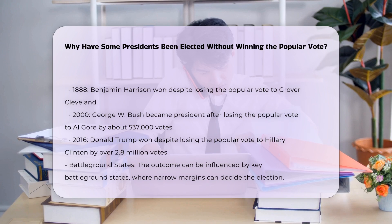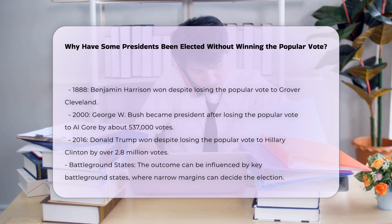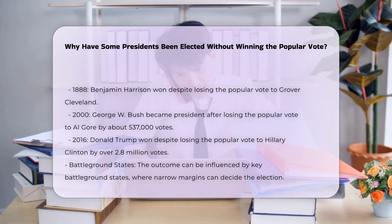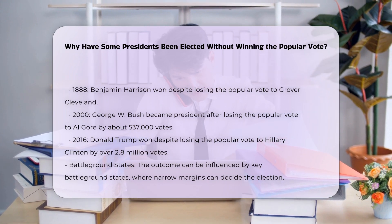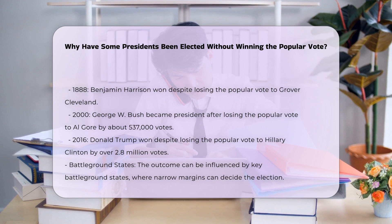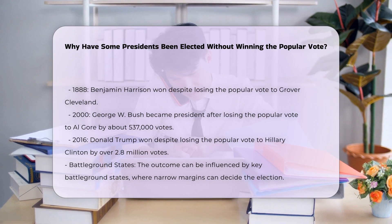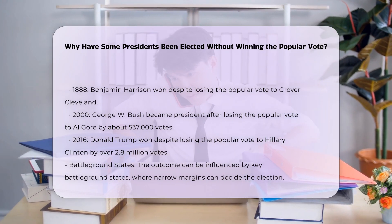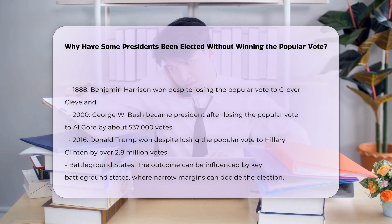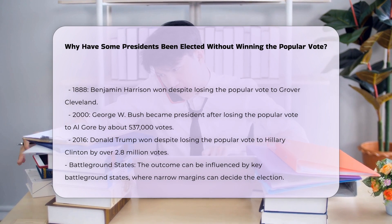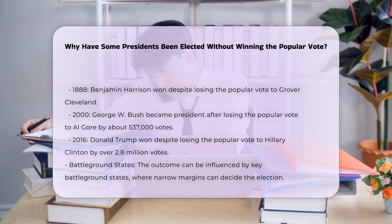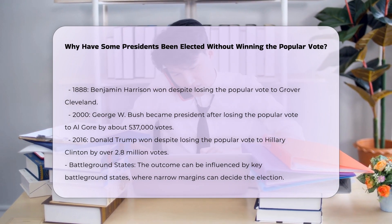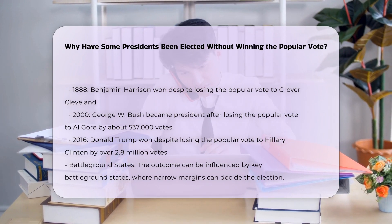In 1876, Rutherford B. Hayes became president even though he lost the popular vote to Samuel J. Tilden by nearly 250,000 votes. In 1888, Benjamin Harrison won the presidency despite losing the popular vote to Grover Cleveland by over 90,000 votes.